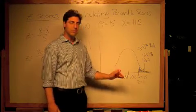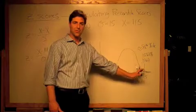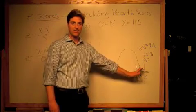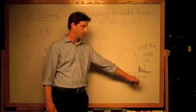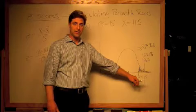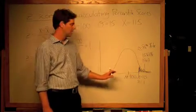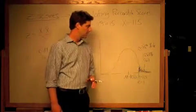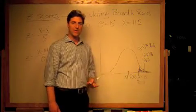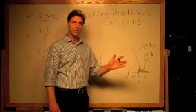...which means about 86 percent of the distribution would have a z-score less than one, or a score on the IQ test of 115 or less. And about 14 percent would be expected to have an IQ score of 115 or higher.